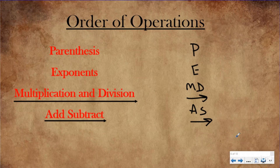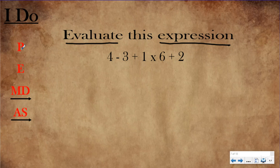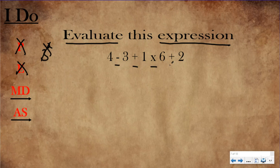Let's take these steps and apply them to a problem. Evaluate the expression — evaluate just means to solve. An expression is basically a math equation but without the equal sign. Every time I have an order of operations question, I write down my steps over here so I can cross them out. Today we're not worried about parentheses — that's next lesson — and I don't have any exponents either, so I cross those out.